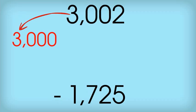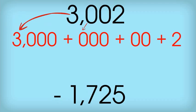Let's say we're going to subtract 3,002 minus 1,725. The first thing I like to do is write my numbers in expanded form. The top number gets broken down into 3,000, 000 to show that we don't have any hundreds, 00 to show that we don't have any tens, and 2.